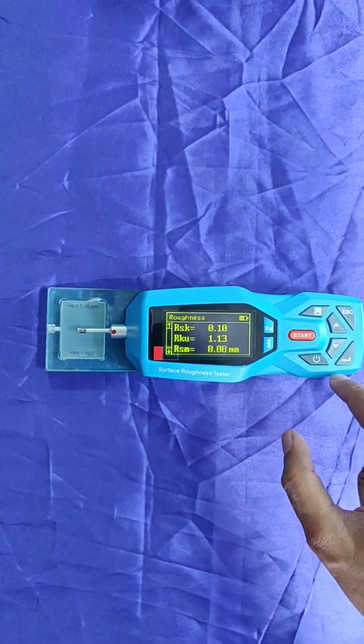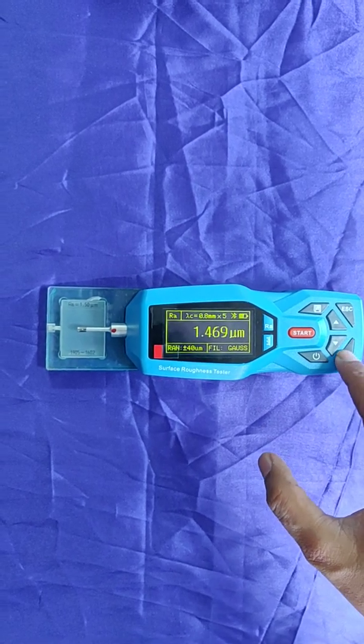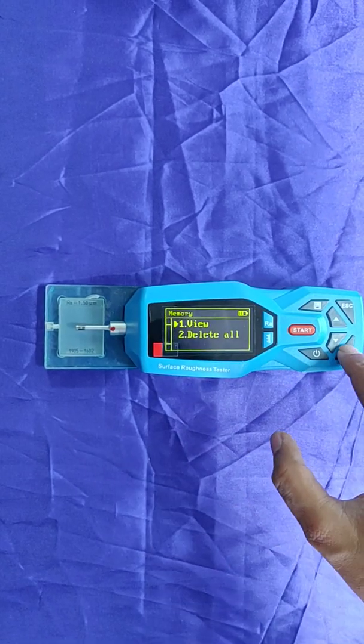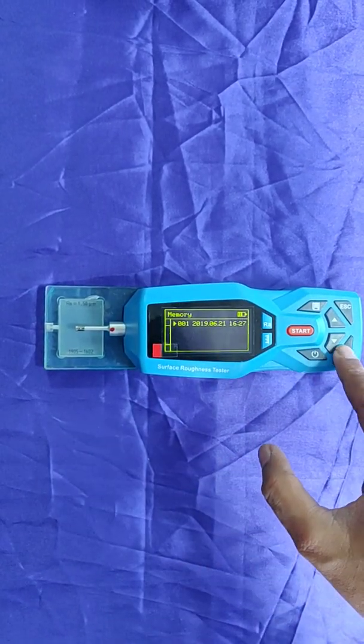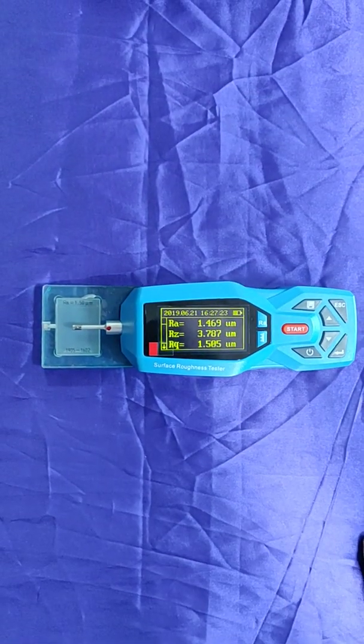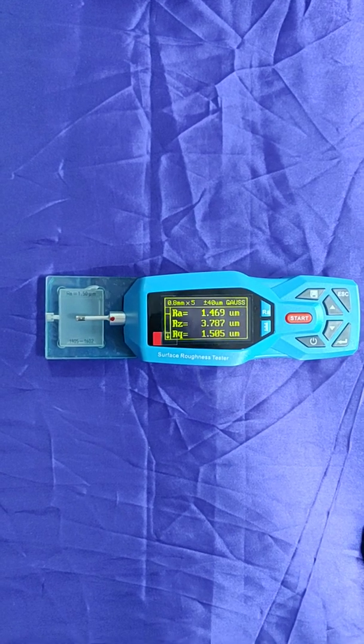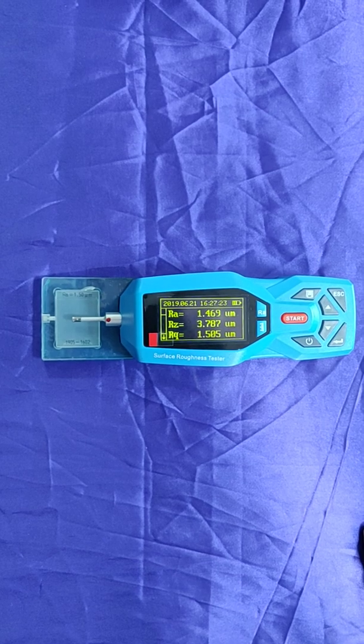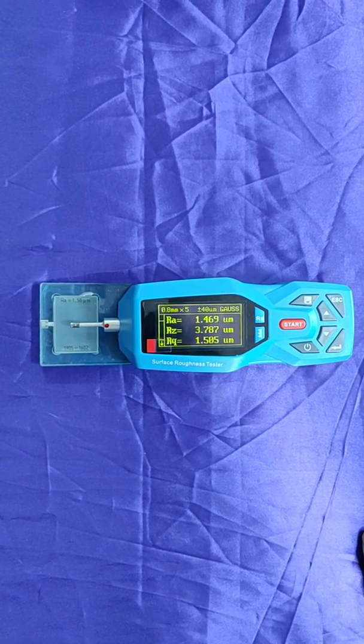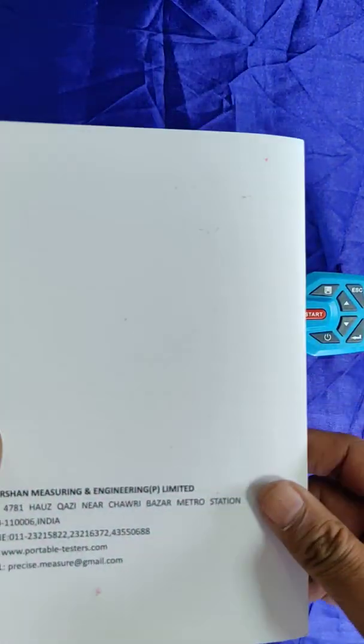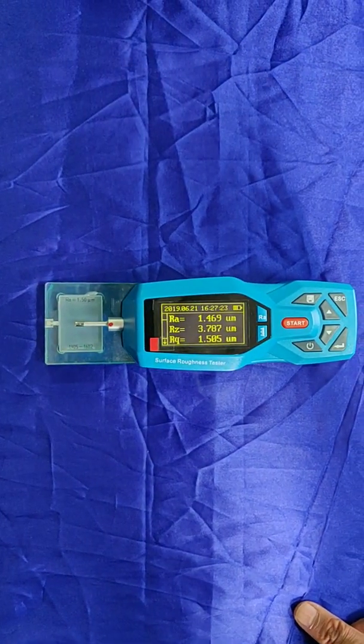Escape. Now if we go to the parameters again, I just want to show you the record. Enter, view. So this is the last reading that we have taken. I hope I have explained almost everything that is required to use a surface roughness tester, but we will still request you to kindly read the user manual carefully carefully before you start using this surface roughness tester.